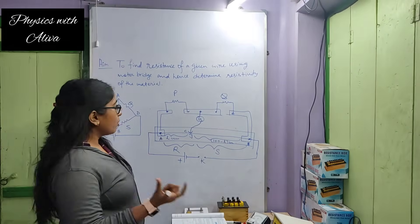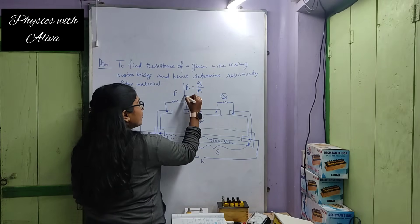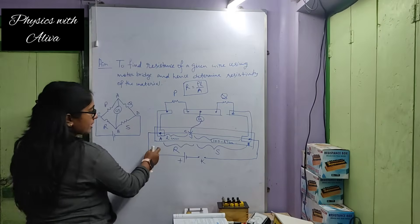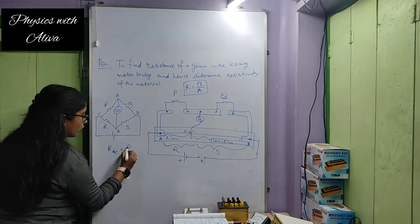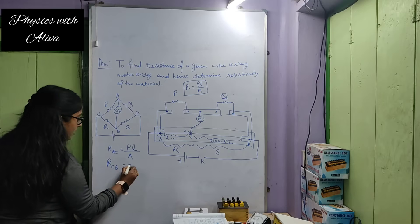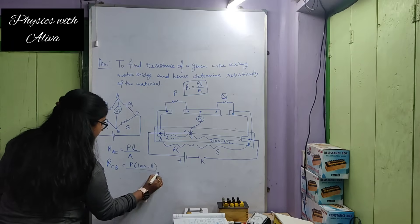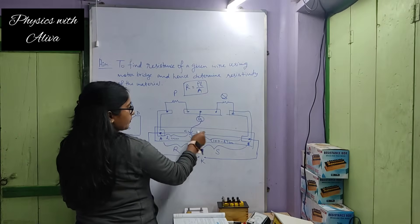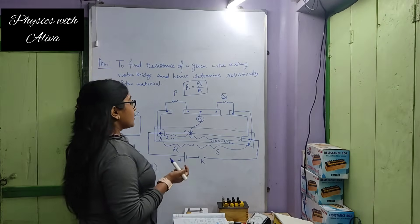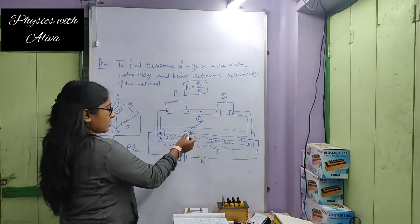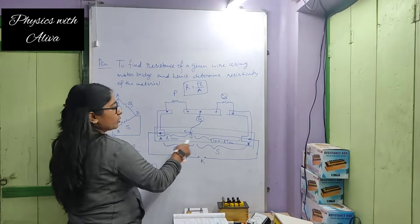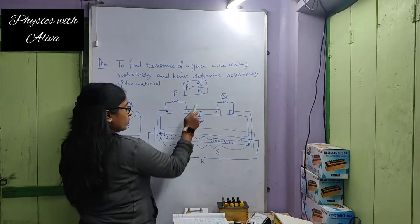The formula of resistance of a wire is ρL/A, where ρ is the resistivity of the material, L is the length of the wire, and A is the cross-sectional area. So resistance of wire AC equals ρL/A and resistance of wire CB equals ρ(100−L)/A. We move the jockey and find the null point C where deflection of the galvanometer is zero — this is the balanced Wheatstone bridge condition — and we apply P/Q = R/S.